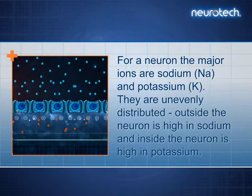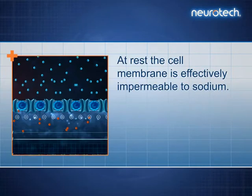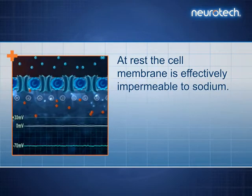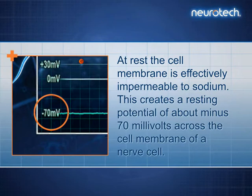They are unevenly distributed. Outside the neuron is high in sodium, and inside the neuron is high in potassium. At rest, the cell membrane is effectively impermeable to sodium. This creates a resting potential of about minus 70 millivolts across the cell membrane of a nerve cell.